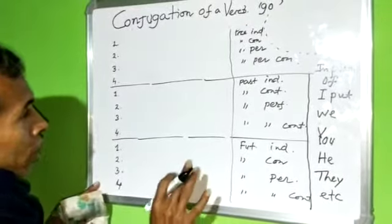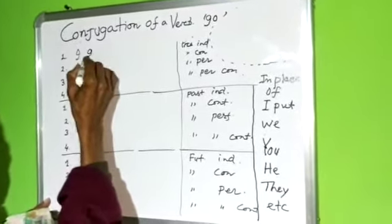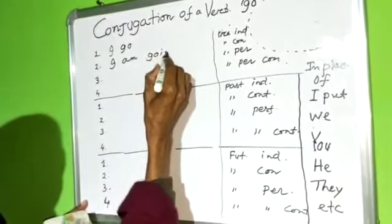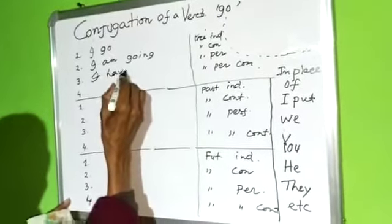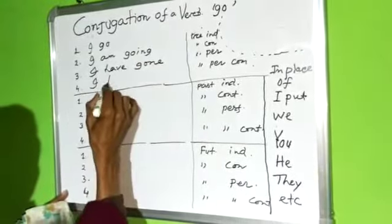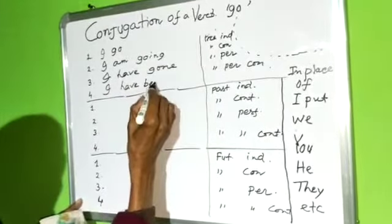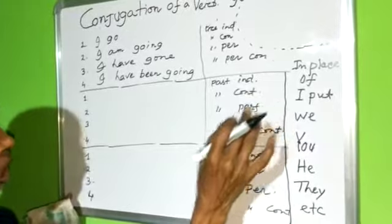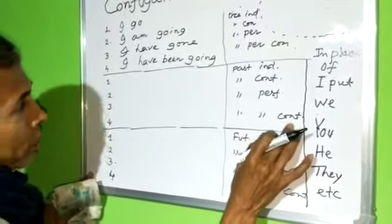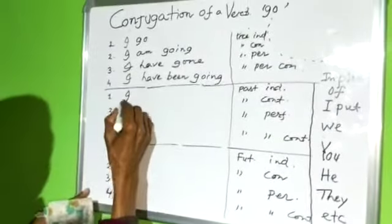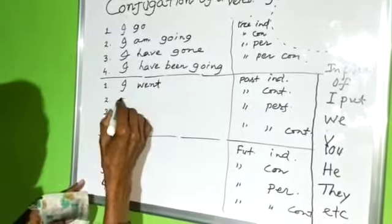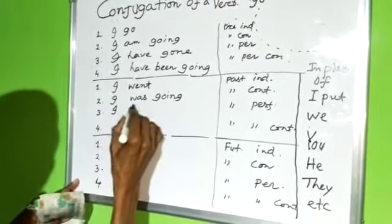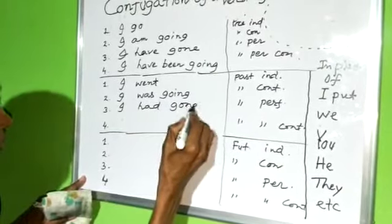Present tense examples: I go. I am going. I have gone. I have been going. Past tense — past indefinite, past continuous, past perfect, past perfect continuous — four sentences: I went. I was going. I had gone.